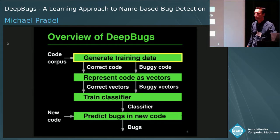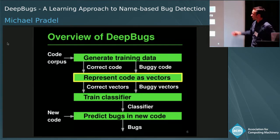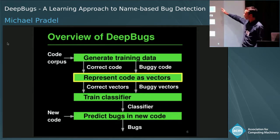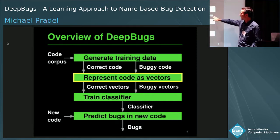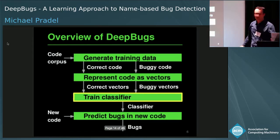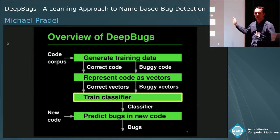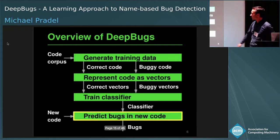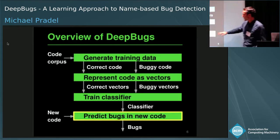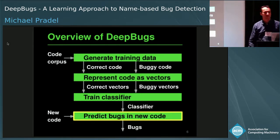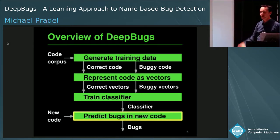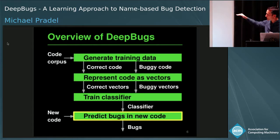We then represent this code as vectors of numbers. We have two sets of vectors — the correct vectors and the buggy vectors — which are given to a classifier for training. Once trained to accurately distinguish between correct and buggy vectors, we can use it on new code to predict whether it's an instance of the bug pattern we trained the classifier for.